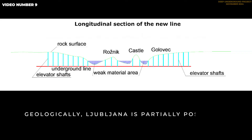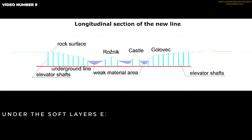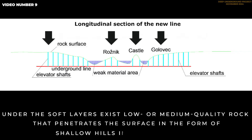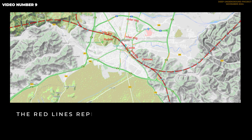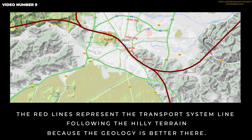Geologically, Ljubljana is partially positioned on weak clay and alluvial layers at a maximum depth of 100 meters. Under the soft layers exist low or medium quality rock that penetrates the surface in the form of shallow hills in some locations. Let's try to make a transport system according to the deep underground concept. The red lines represent the transport system line following the hilly terrain, because the geology is better there.